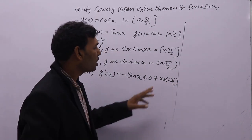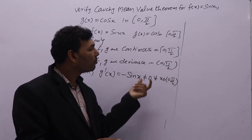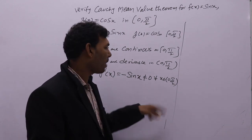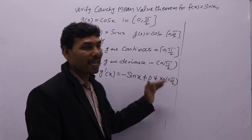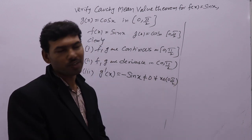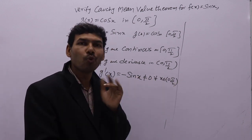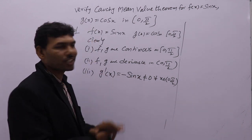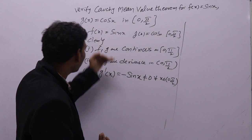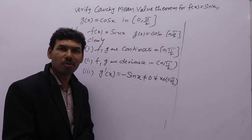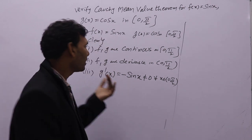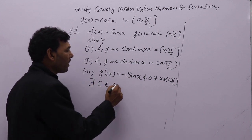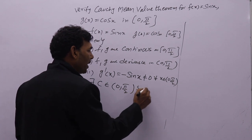Open interval means excluding 0 and π/2. We know sin 0 is 0, but since 0 is excluded in the open interval, sin x will not equal 0 anywhere in (0, π/2). So the third condition is also satisfied. Therefore the three conditions of Cauchy mean value theorem are satisfied by f and g. There exists c in open interval (0, π/2) such that the theorem applies.